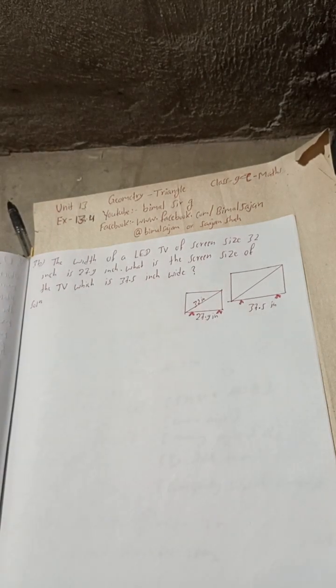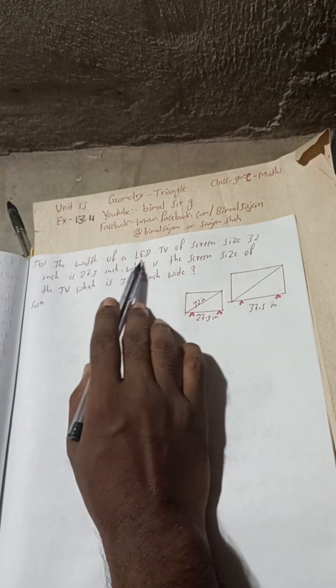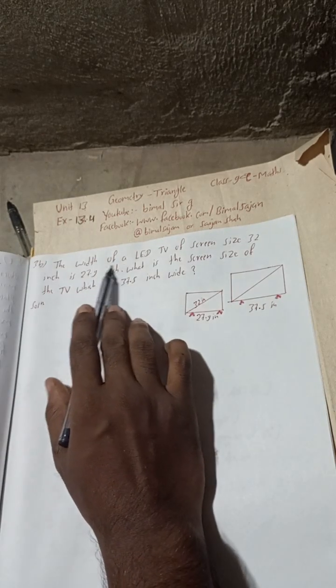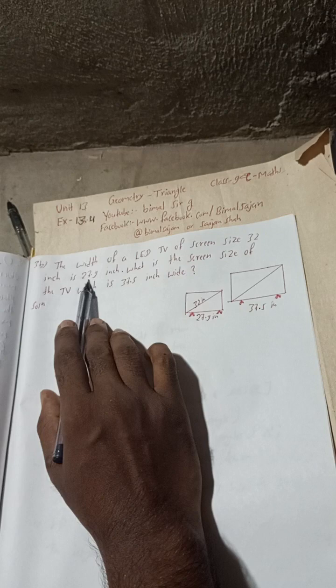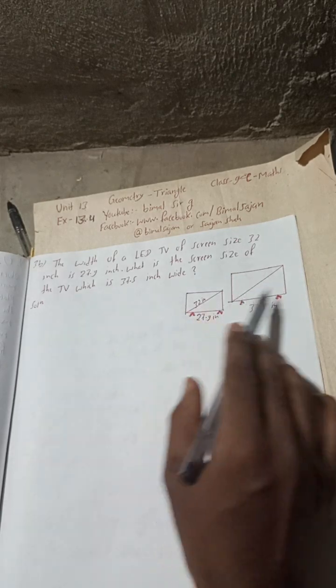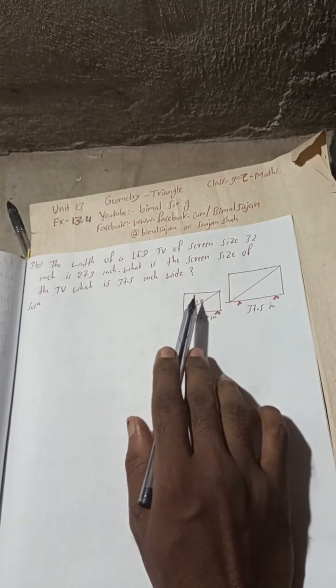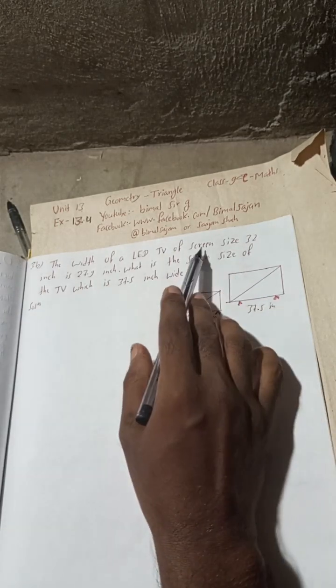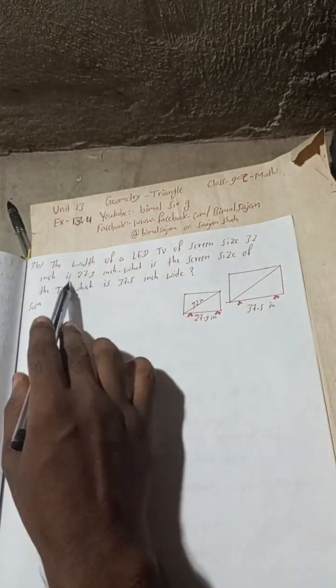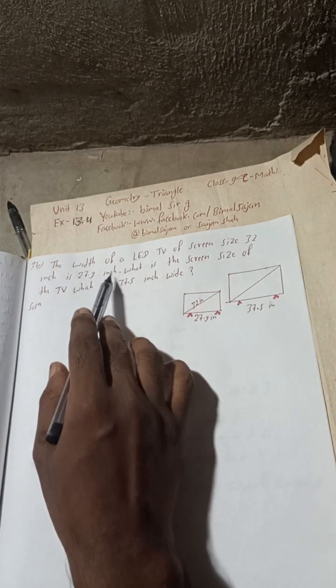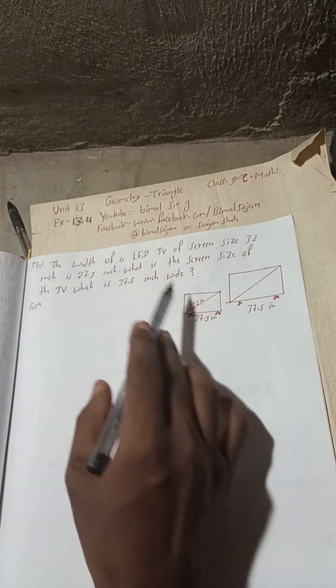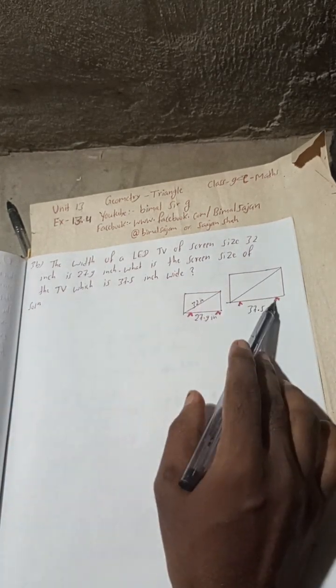Let's begin this solution. Now, the width of an LED TV of screen size 32 inch is 27.9 inch. What is the screen size of the TV which is 37.5 inch wide? This is an LED TV of screen size 32 inch. The width of this is 27.9 inch, and what is the screen size of the TV which is 37.5 inch wide?